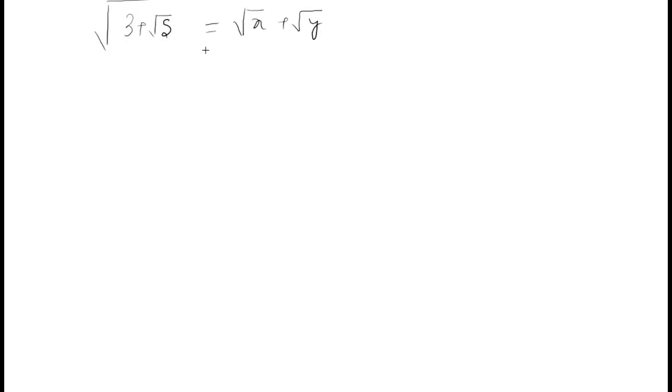Now what we are doing is we are squaring on both sides. So this will become 3 plus root 5 equals to root x plus root y whole square. And what will this become is 3 plus root 5 equals x plus y plus 2 root xy.